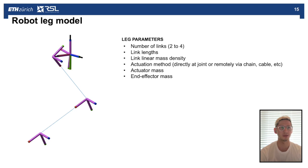Next we define the robot leg model in Vitruvio. This consists of the number of links in the leg, and we can observe two to four links. The link lengths and the linear mass density, which defines with the link lengths the link mass. The actuation method, so this could be directly actuated at the joint or a remote actuation via, for example, a chain or a cable. The actuator mass and the end effector mass.